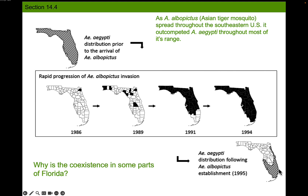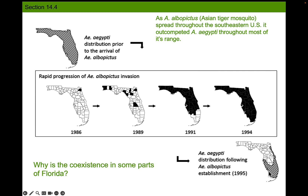After a lot of experimentation, it turns out the Asian tiger mosquito is the better competitor — it's better at producing offspring more quickly — except when it's really, really hot. In regions where it's hot, the yellow fever mosquito tends to do a little bit better, and so in those warmer areas you're actually able to see coexistence between the two species.